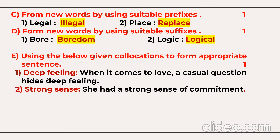Next, you need to frame sentences using two collocations: 'deep feeling' and 'strong sense'. You need to make a very meaningful sentence. For example: 'When it comes to love, a casual question hides deep feeling.' And: 'She had a strong sense of commitment.' That's one mark for each collocation sentence.